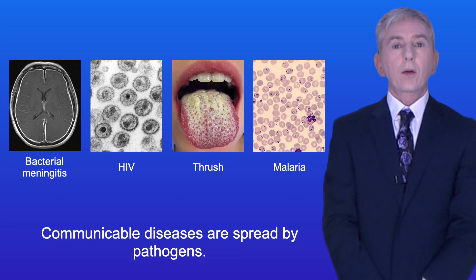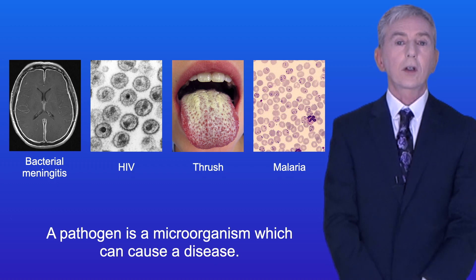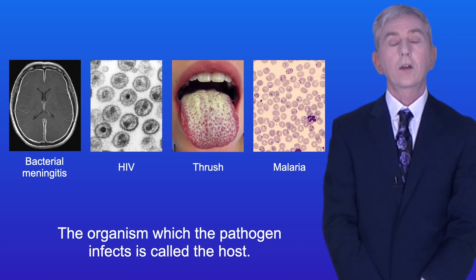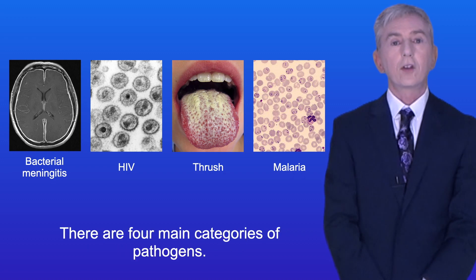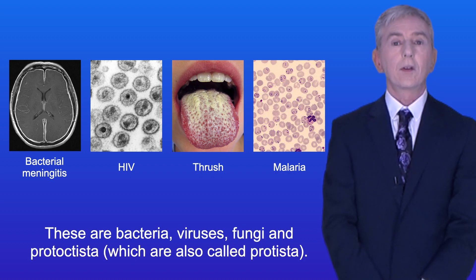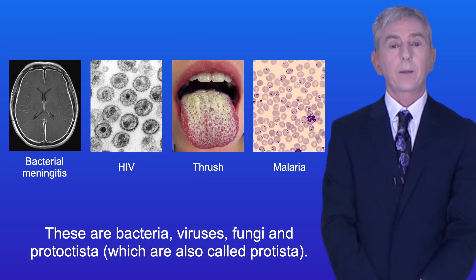Communicable diseases are spread by pathogens, and a pathogen is a microorganism which can cause a disease. The organism which the pathogen infects is called the host. There are four main categories of pathogens: bacteria, viruses, fungi, and protoctista, which are also called protista.